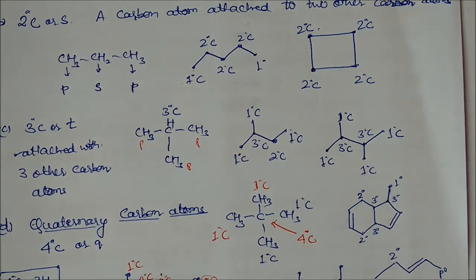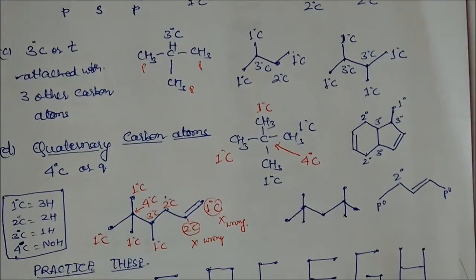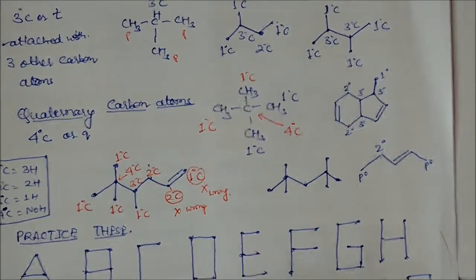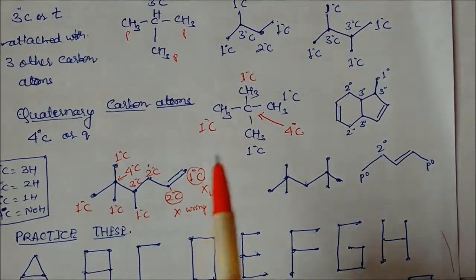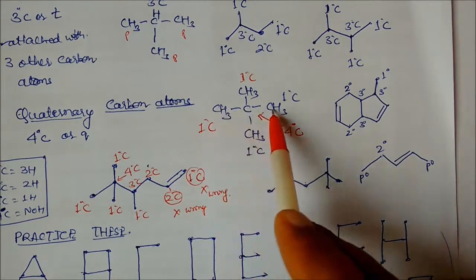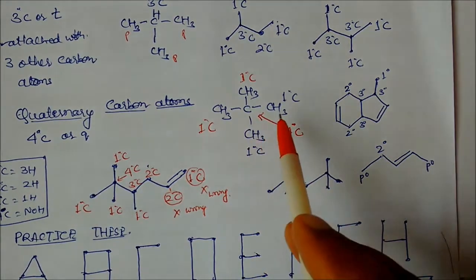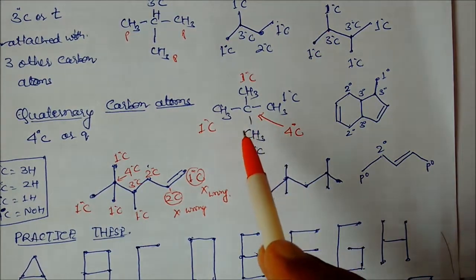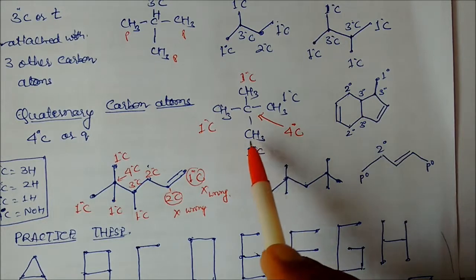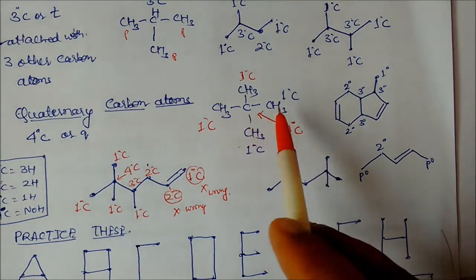Quaternary carbon means the carbon is attached to four other carbon atoms, represented as Q or 4°. You can see your examples: in methane all carbons are primary carbons.